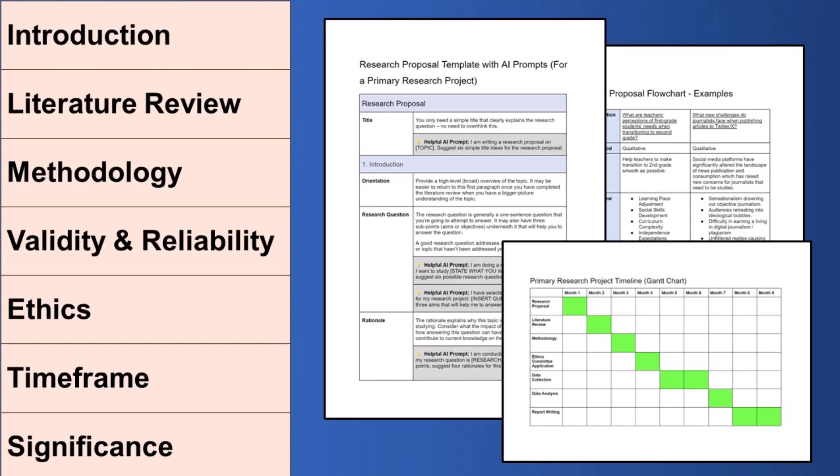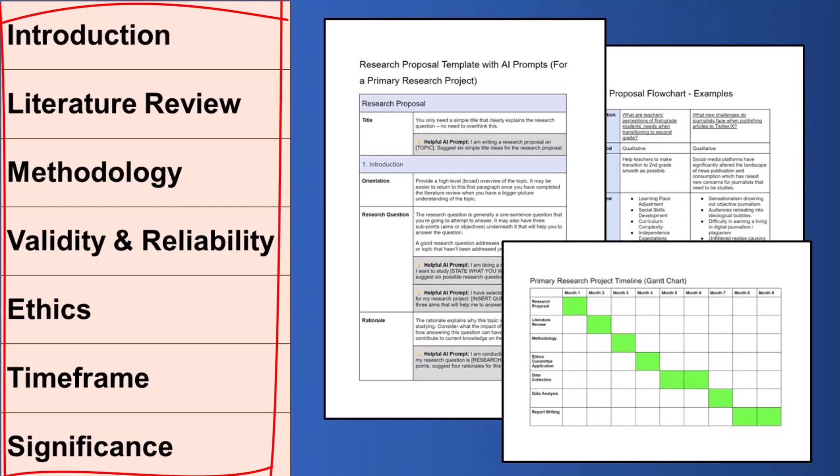A research proposal generally has the structure you can see on the left-hand side of the screen here. You'll cover an introduction, a literature review, a proposed methodology, a statement of ethics, a proposed time frame, and a statement of what the significance of the study will be. We'll walk through each of these steps and what to include in each step for a general research proposal.